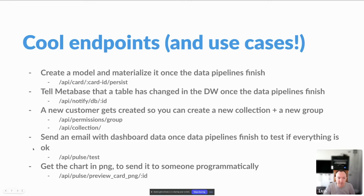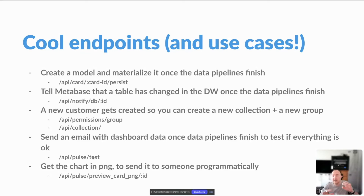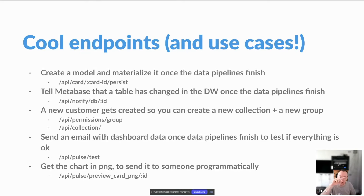Another cool example just came up a few days ago: you can do testing by sending an email to a customer with their data using the test endpoint on subscriptions. You can also get a PNG of a chart visualization from the backend, without using the snipping tool or screen capture — programmatically get the actual chart image and send it. We have people that do that.